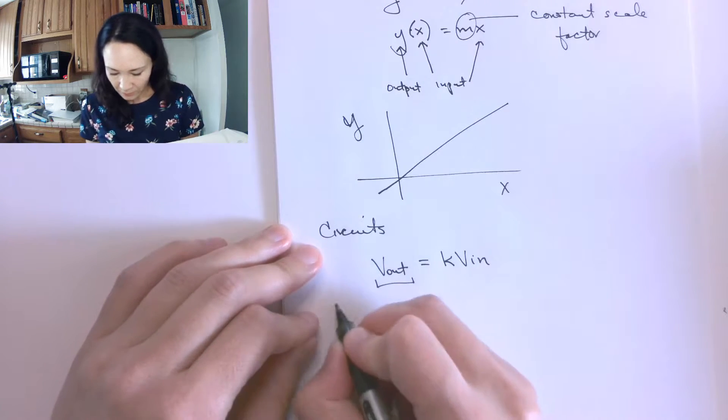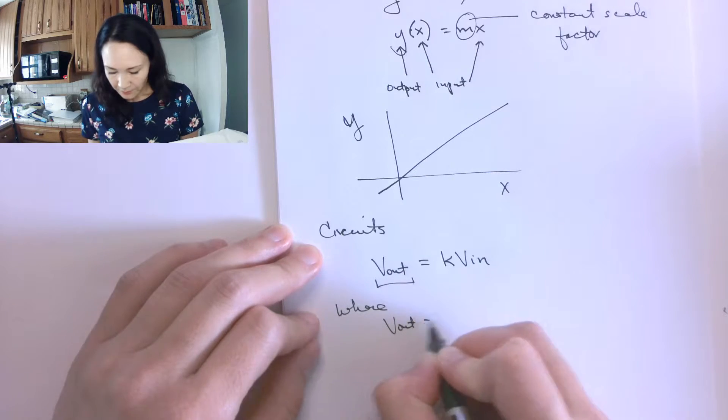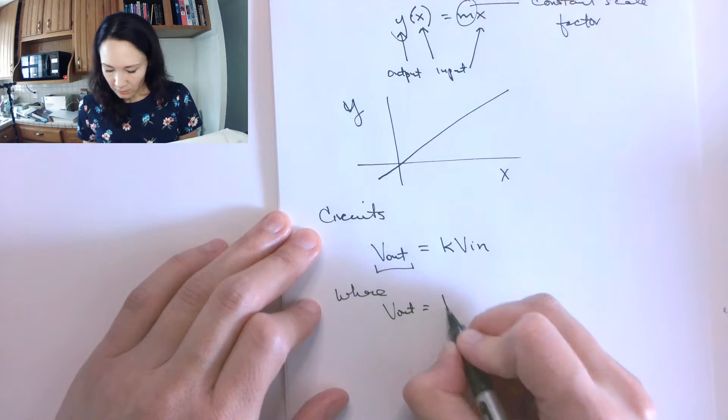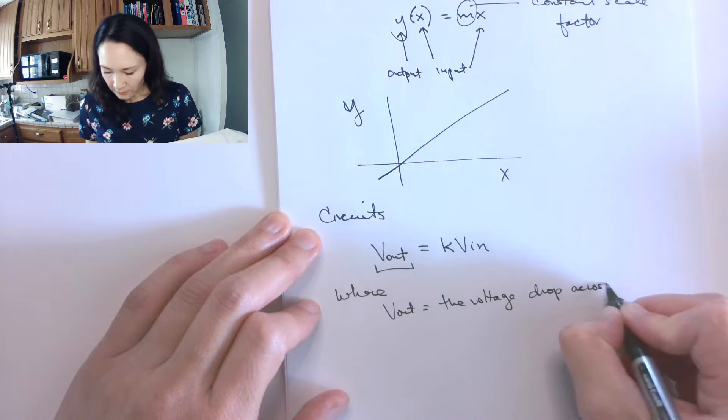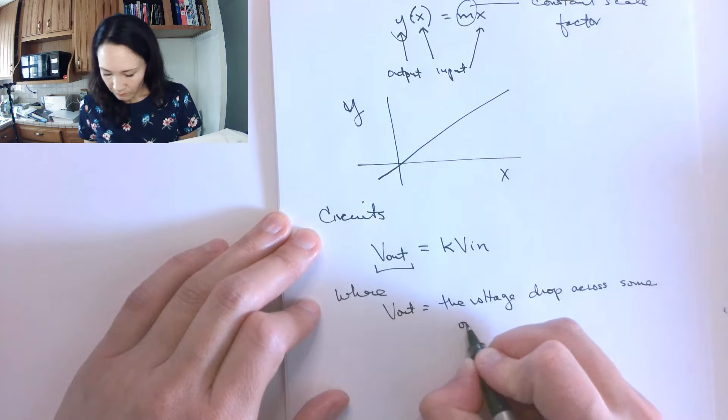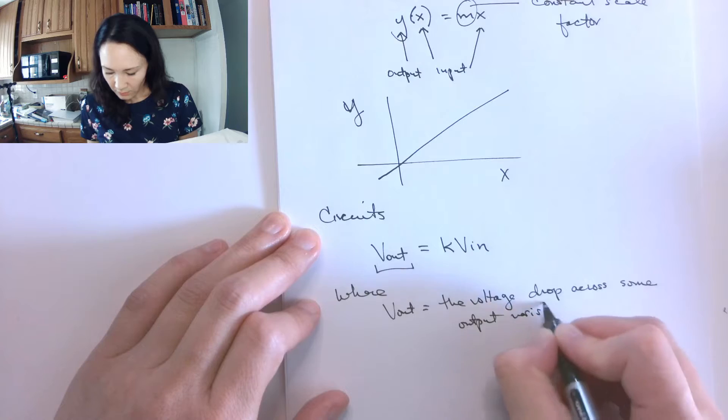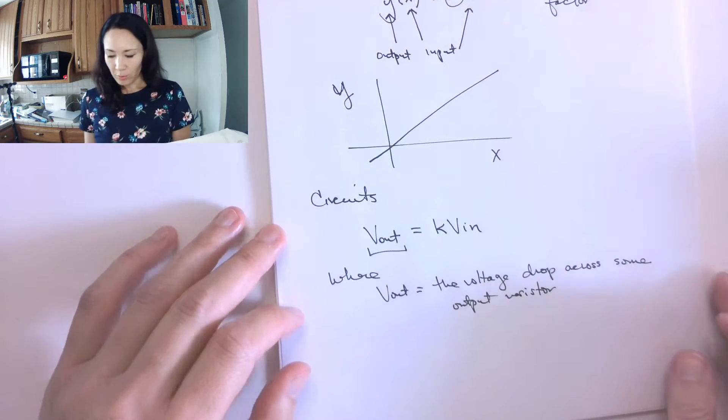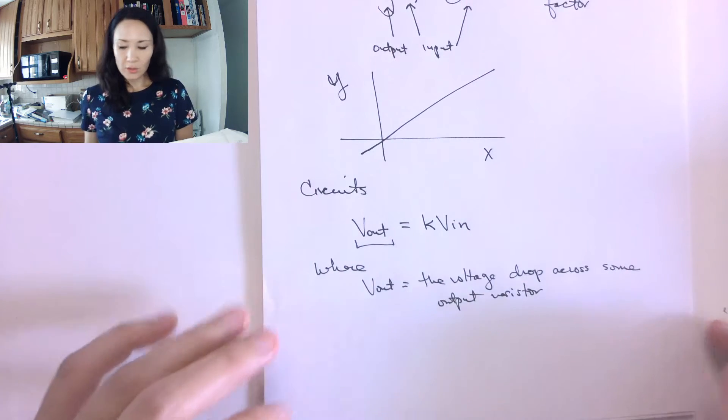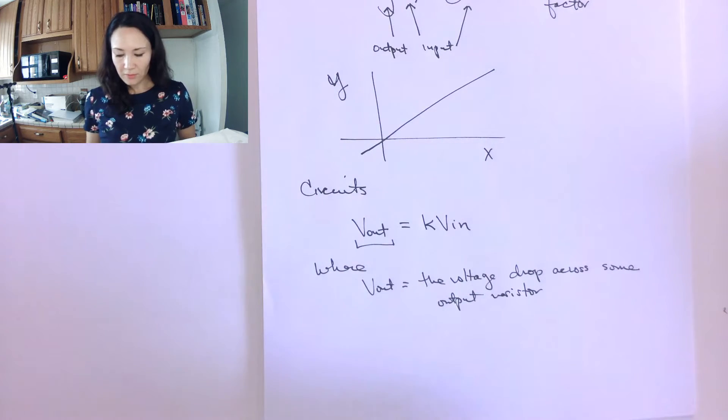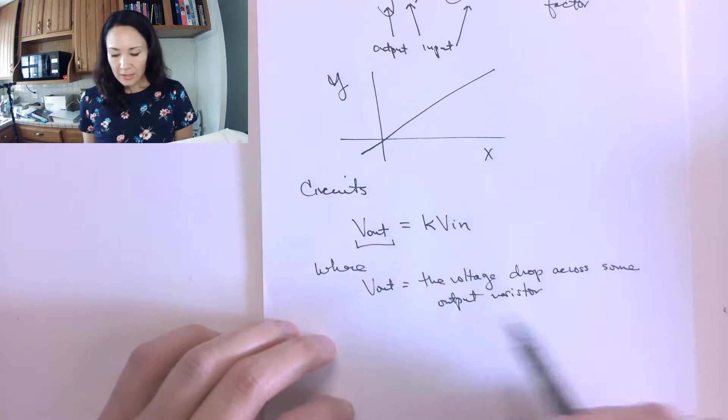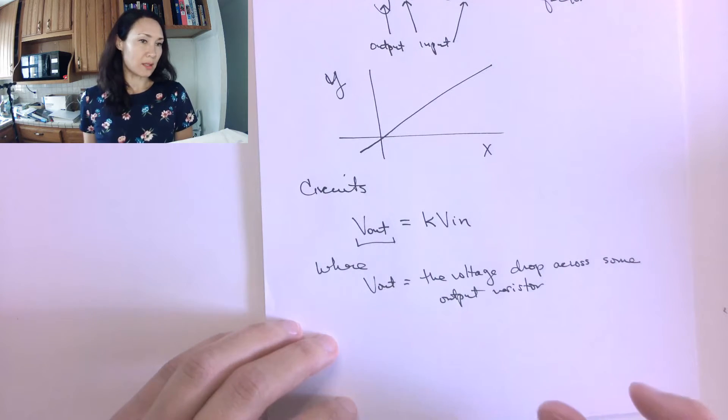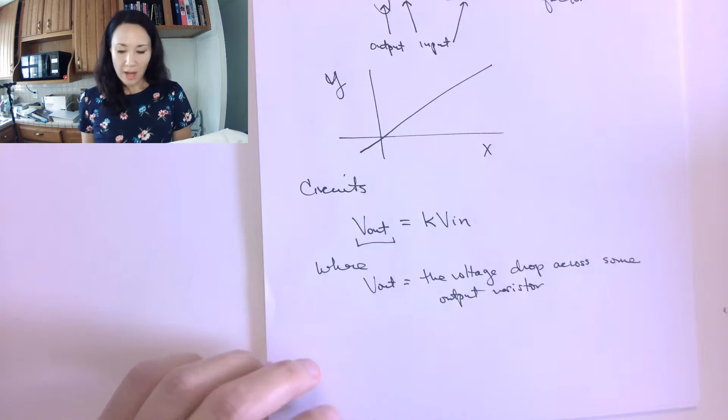This v out is going to be, here I'll write it like this, where v out is the voltage drop across some output resistor. So we get to designate what this output resistor is. It could be any of the resistors in our circuit, or maybe it's listed for us on the circuit. Anyway, it's just going to be a resistor that's either in series parallel or series parallel with other resistors, potentially. And so we're interested in the voltage drop just across this one particular resistor. So we're going to designate it our output resistor.